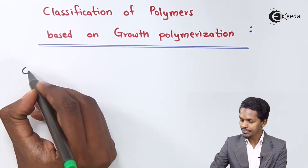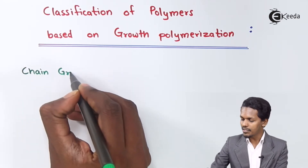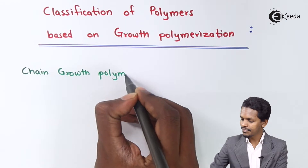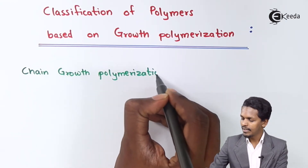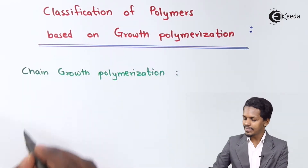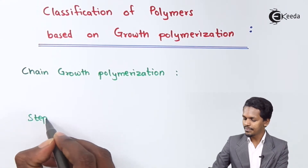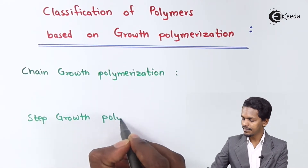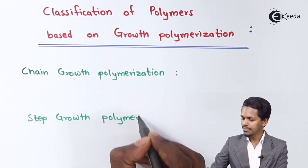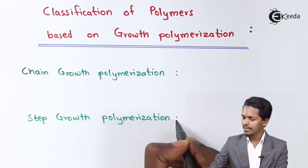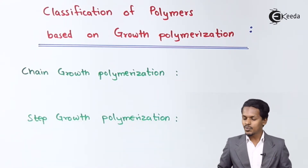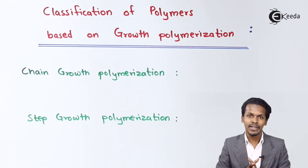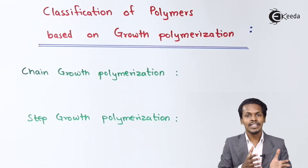The first is chain growth polymerization, and the next is step growth polymerization. What is the difference between these two? Chain growth polymerization is very similar to addition polymers, which we discussed in our previous lecture.